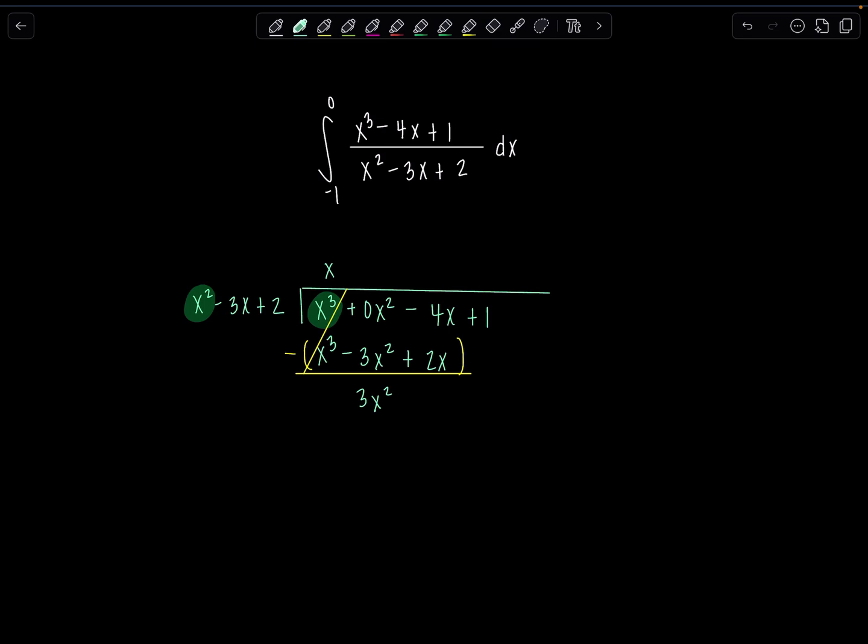And then negative 4x minus 2x, which is negative 6x. Bring down that one. Then you repeat the division process. So you're going to say, what's 3x squared divided by x squared, or what do you multiply x squared by to make it 3x squared? Same thing. Just a positive 3.